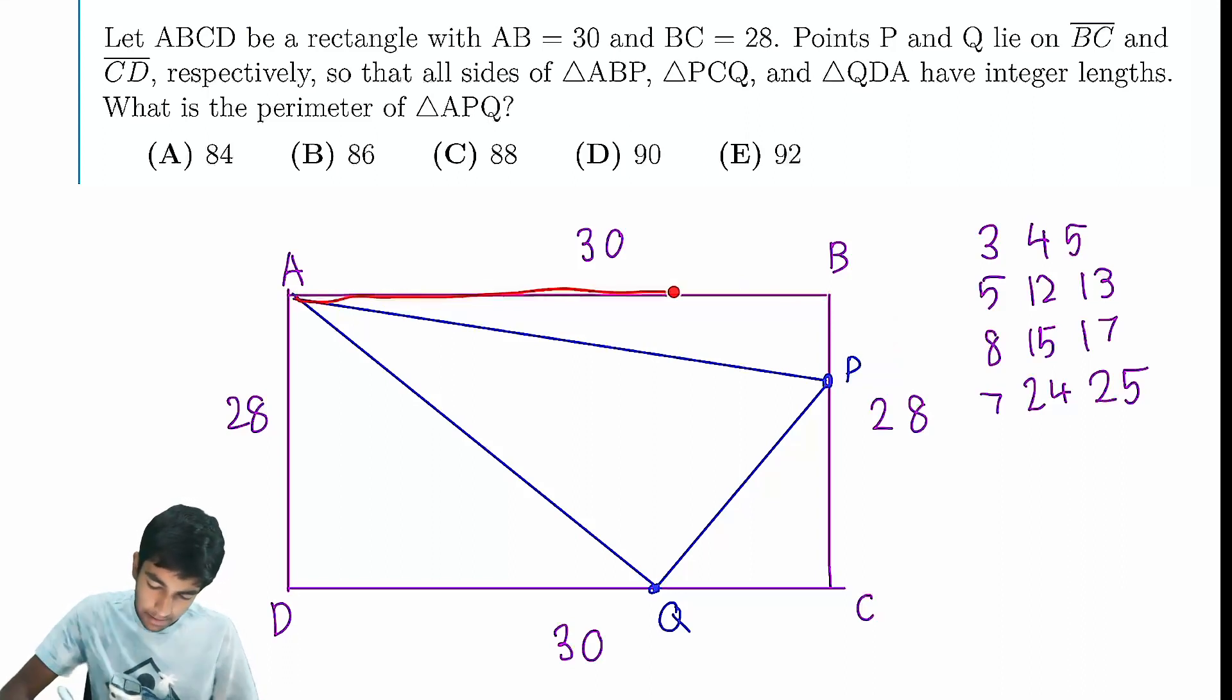Then you realize, AB is 30 and BP has to be less than 28, so AB is the longer leg. AB has to fall within this column. It's not the hypotenuse, but it's also not the shorter leg.